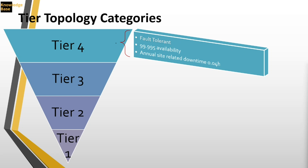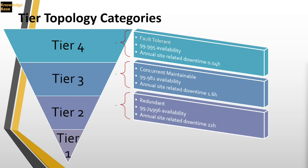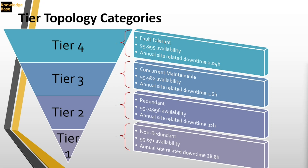Tier 4 means fault tolerant, with 99.995% availability and an expected downtime of 0.04 hours per year. Tier 3 is concurrently maintainable — you can maintain the data center while it's running — with 99.982% availability and expected downtime of 1.6 hours per year. Tier 2 has a redundant UPS solution, with 99.749% availability and annual downtime of 22 hours. Tier 1 is non-redundant with 99.649% availability and expected downtime of 28.8 hours per year.